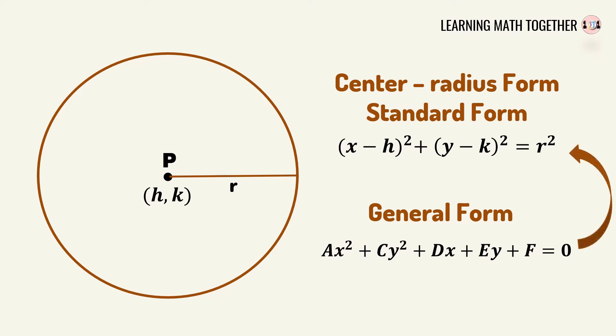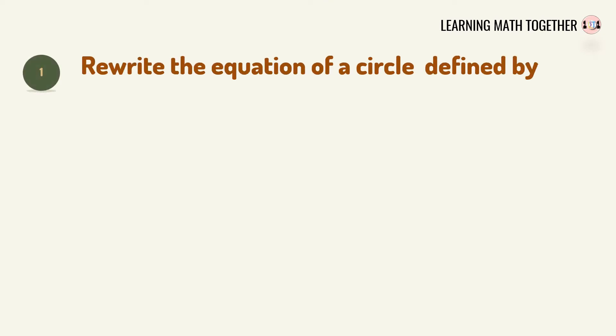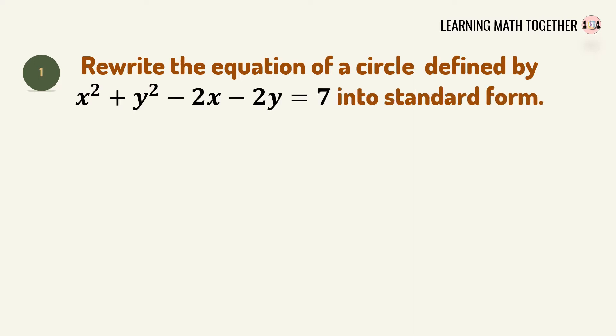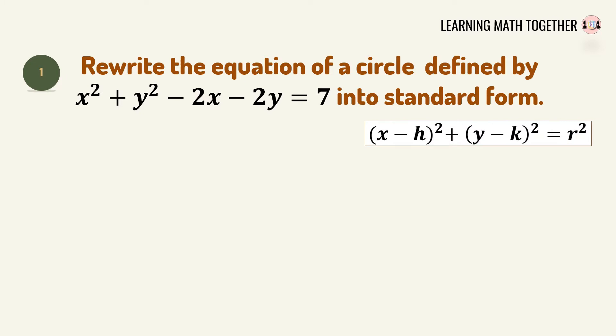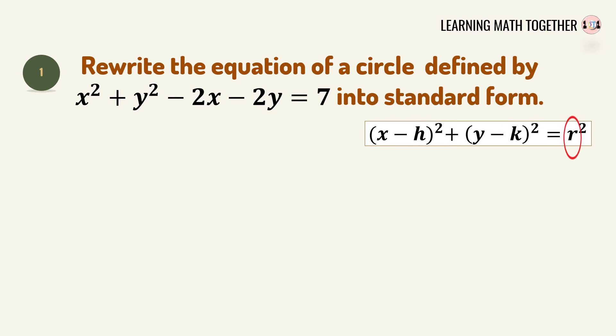For example number one, we have to rewrite the equation of the circle defined by x squared plus y squared minus 2x minus 2y equals 7 into standard form. Take note that the standard form must be in the form (x minus h) squared plus (y minus k) squared equals r squared, where h and k are the coordinates of the center and r is the radius.